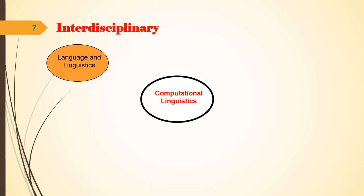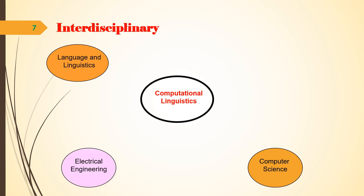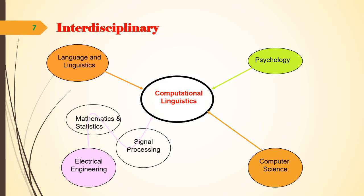We will discuss the interdisciplinary nature of computational linguistics. As mentioned earlier, computational linguists' work is not limited to the arena of a single subject. It is of an interdisciplinary nature and its connections span from linguistics and logic to mathematics and statistics. As you can see in the diagram, computational linguistics is related to language and linguistics in the sense that it aims to develop computational models with linguistic competencies.